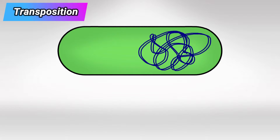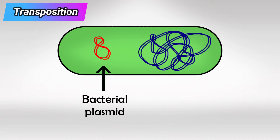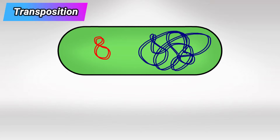Over time, bacteria evolved to extract small parts of the bacterial DNA to become the bacterial plasmid. The plasmid is basically bacterial DNA except that it's unwound and readily accessible. It's free-floating and small, so it's highly efficient for functions that require repetitive DNA use.